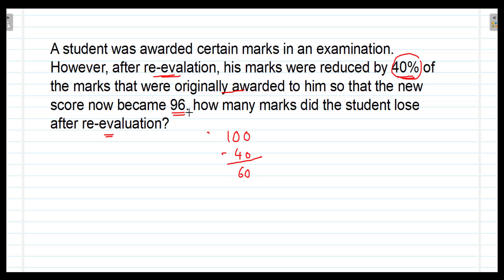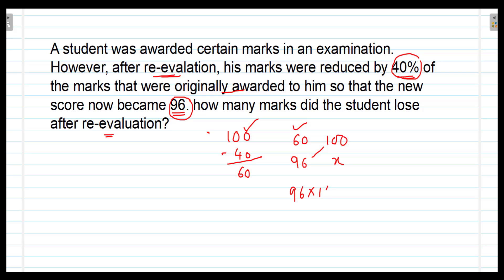But it is said that his new score is 96. When his new score is 60, the original marks are 100. So if his new score is 96, what will be the original marks? We multiply these two and divide by the first one, since this is direct variation. So it is 96 multiplied by 100 divided by 60.